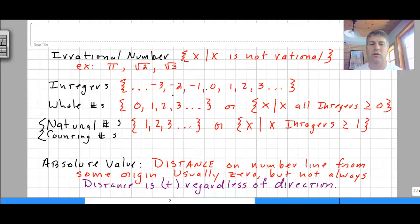Whereas whole numbers are integers with zero and all the positive numbers, or whole numbers could be expressed as the set of all integers that are greater than or equal to zero.